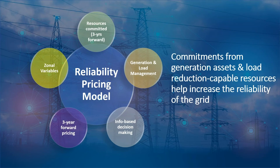The reliability pricing model is based on a three-year forward pricing scheme, which we'll discuss in a few slides. That pricing varies by zone, and there are a number of zones throughout PJM. Those resources are committed three years forward. We'll talk specifically about the base residual auction and the incremental auctions, including upcoming dates and which delivery period is covered. The general scheme is to provide that three-year forward market for reliability purposes.